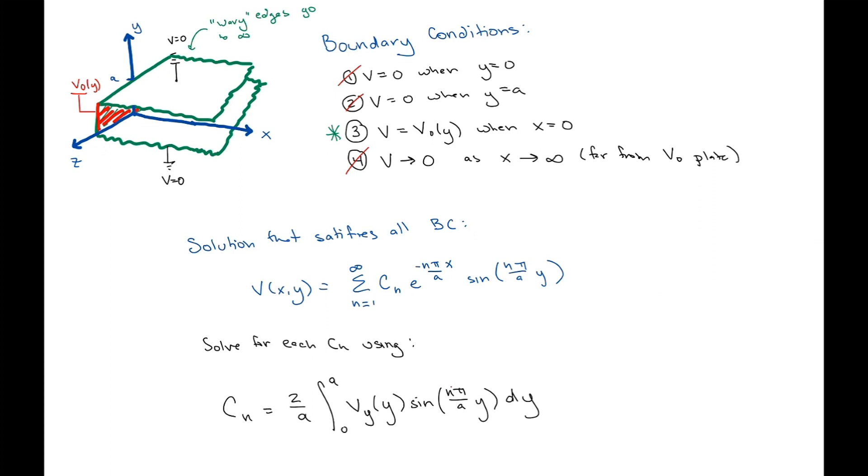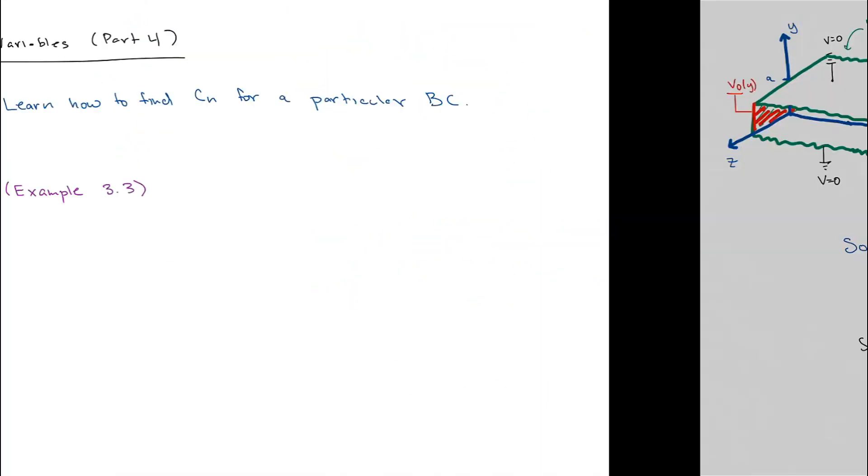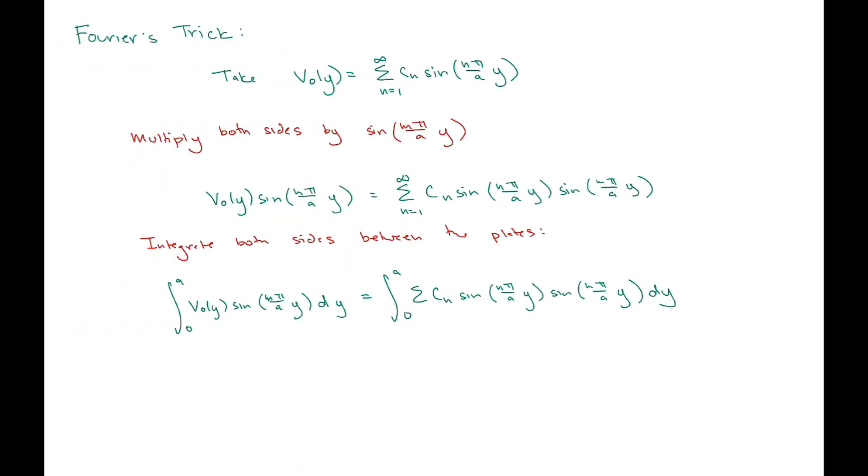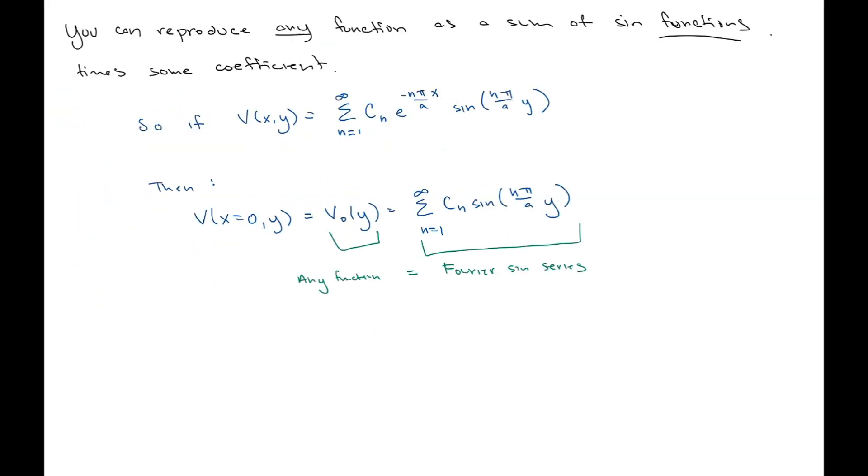We had this particular charge configuration over here that gave us this set of boundary conditions. Our general solution at the beginning of the last lecture satisfied three out of four. Then, in the last lecture, we used Fourier series and Fourier's trick to figure out how to satisfy this last boundary condition. So now we have a solution that satisfies all of the boundary conditions. It is going to be a sum of a bunch of sine series. And we learned that you can construct any function you want out of a sine series, which is what allows us to actually do this.